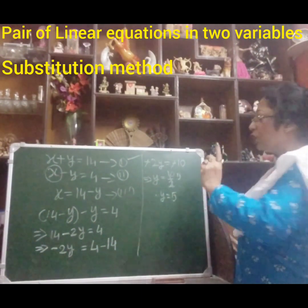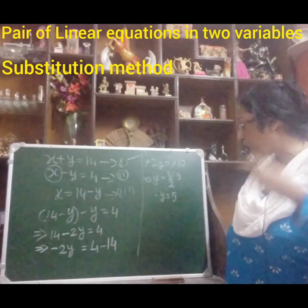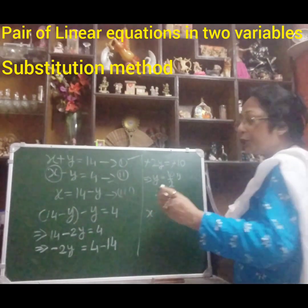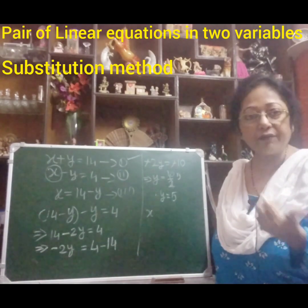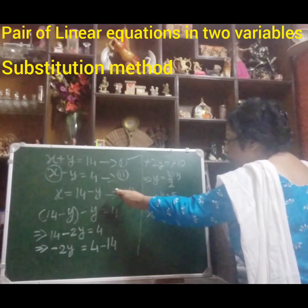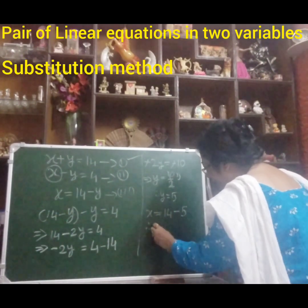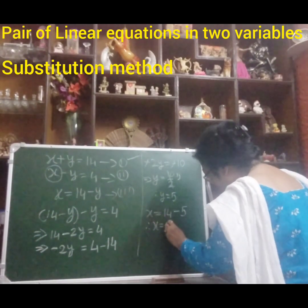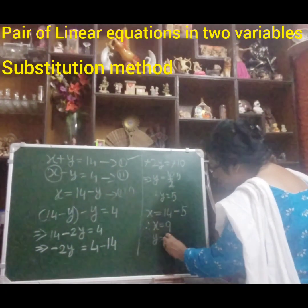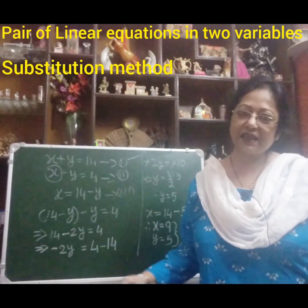Now we will put the value of y in equation number 3 to find out the value of x. Equation number 3 is x equals to 14 minus y. Our value of y is 5, so x equals to 14 minus 5. Therefore x equals to 9. So our values are x equals to 9 and y equals to 5 — these are the values of the two variables. This is the substitution method.